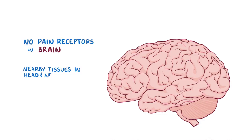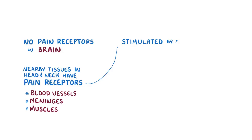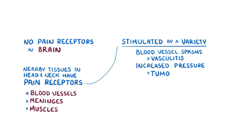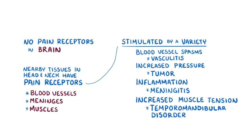These pain receptors might be stimulated by a variety of things, such as blood vessel spasm like in vasculitis, increased pressure like from a tumor, inflammation like in meningitis, or increased muscle tension like in temporomandibular disorder. That helps explain the pain in secondary headaches.